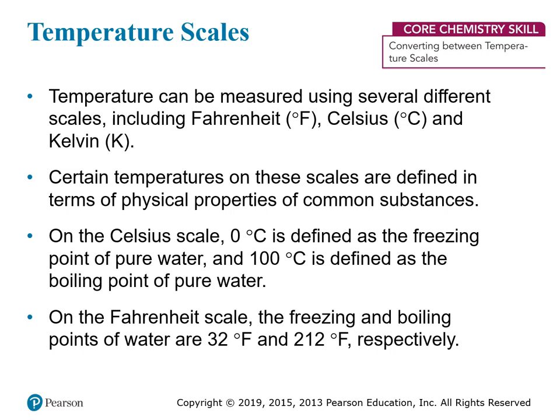All of these scales are defined in terms of the physical properties of certain substances. For example, on the Celsius scale, the zero degree mark is defined by the temperature at which pure water freezes. The temperature at which pure water boils is defined as 100 degrees Celsius. These temperatures on the Fahrenheit scale are different — pure water freezes at 32 degrees and boils at 212 degrees.